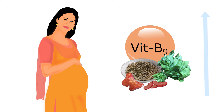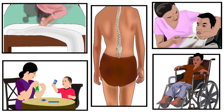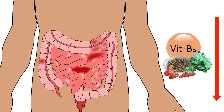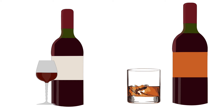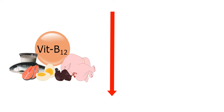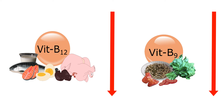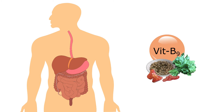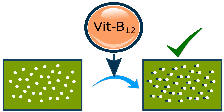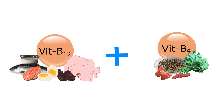During pregnancy, the requirements of folate increase. Inadequate intake during this time can result in folate deficiency. Poor absorption of folate by the body or excess alcohol intake can also cause deficiency. A deficiency of vitamin B12 can indirectly lead to folate deficiency — even if folate is present, it cannot perform its function, because vitamin B12 is required to convert folate into its active form. Thus, adequate intake of vitamin B12 along with folate is important.